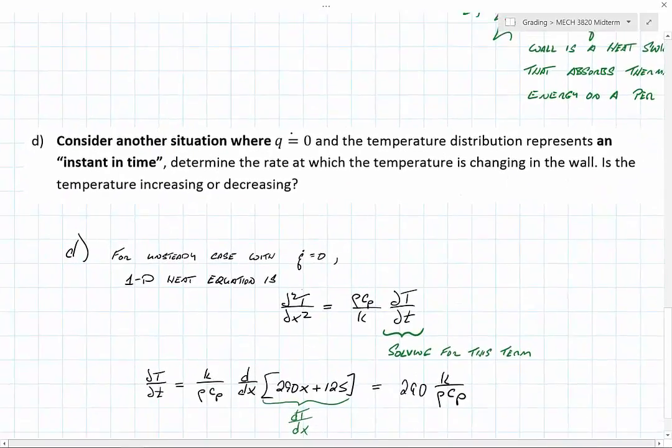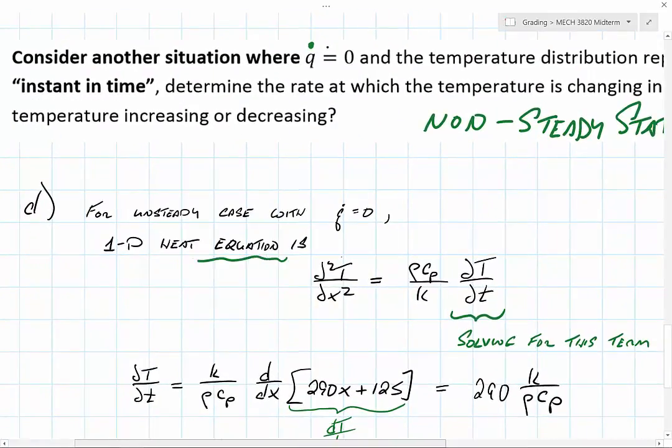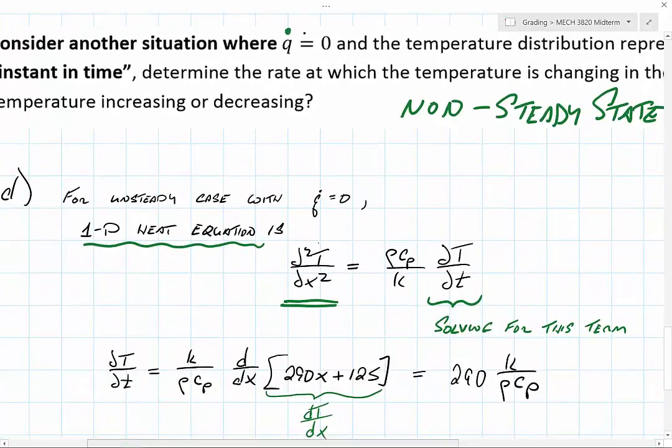The last part of this problem says consider a situation where q dot equals zero and the temperature distribution represents an instant in time, so now we're in a non-steady state situation. We have an expression for how the heat changes in a one-dimensional plane wall for all types of conditions—steady or non-steady, q dot or non q dot. That is the 1D heat equation. We have the second derivative of the temperature distribution, and that equals material properties of the wall times the time rate of change of the temperature field.